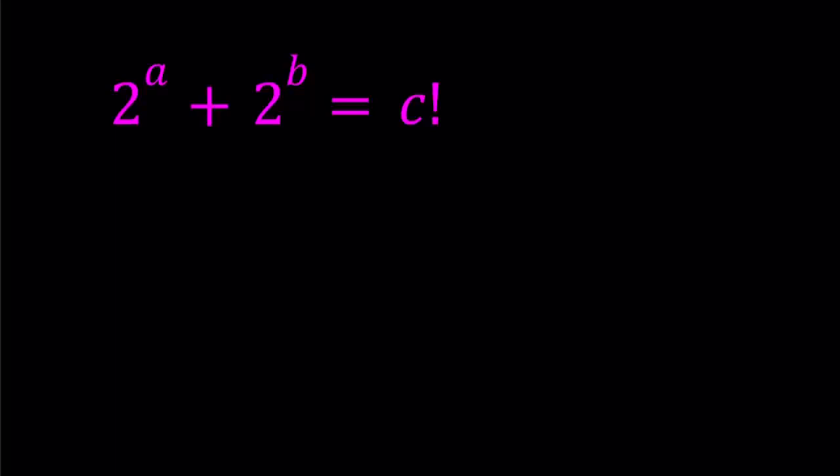Hello everyone. In this video, we're going to be solving an equation with factorials. We have 2 to the power a plus 2 to the power b equals c factorial, where a, b, c are non-negative integers, and we're looking for a, b, c values.